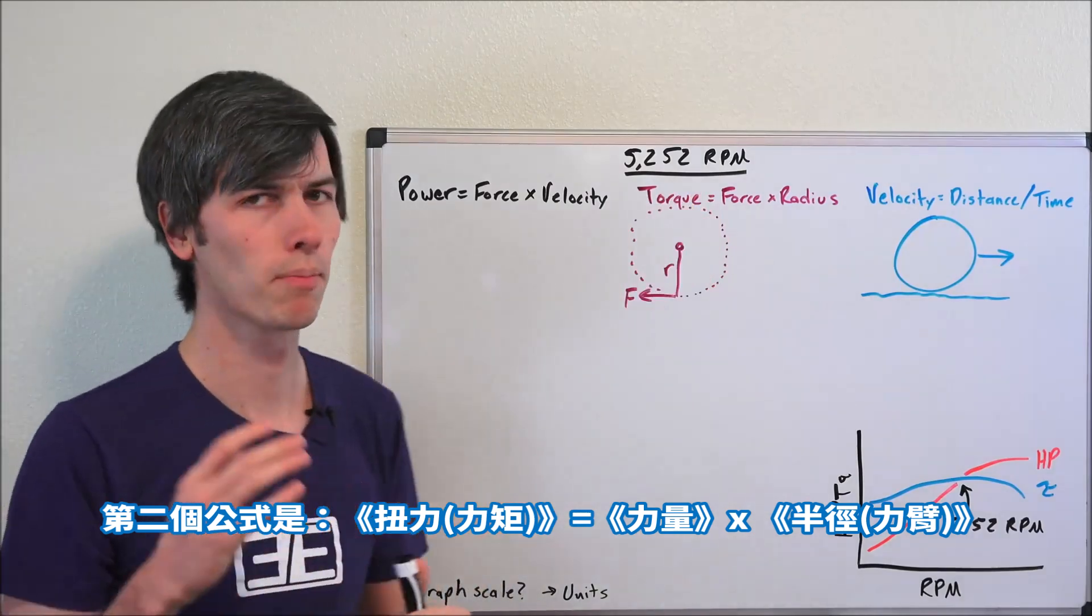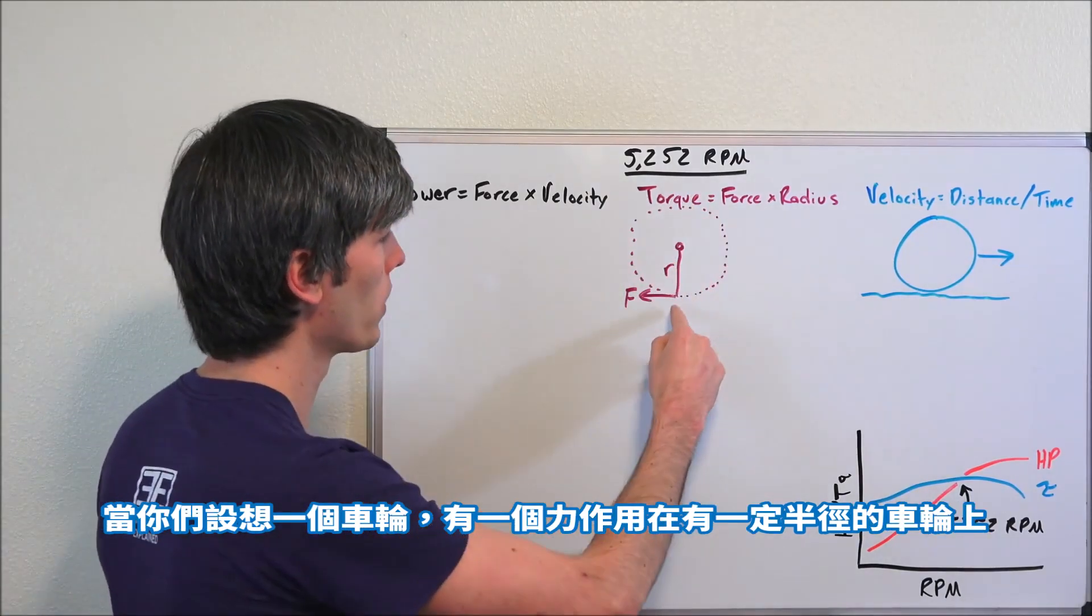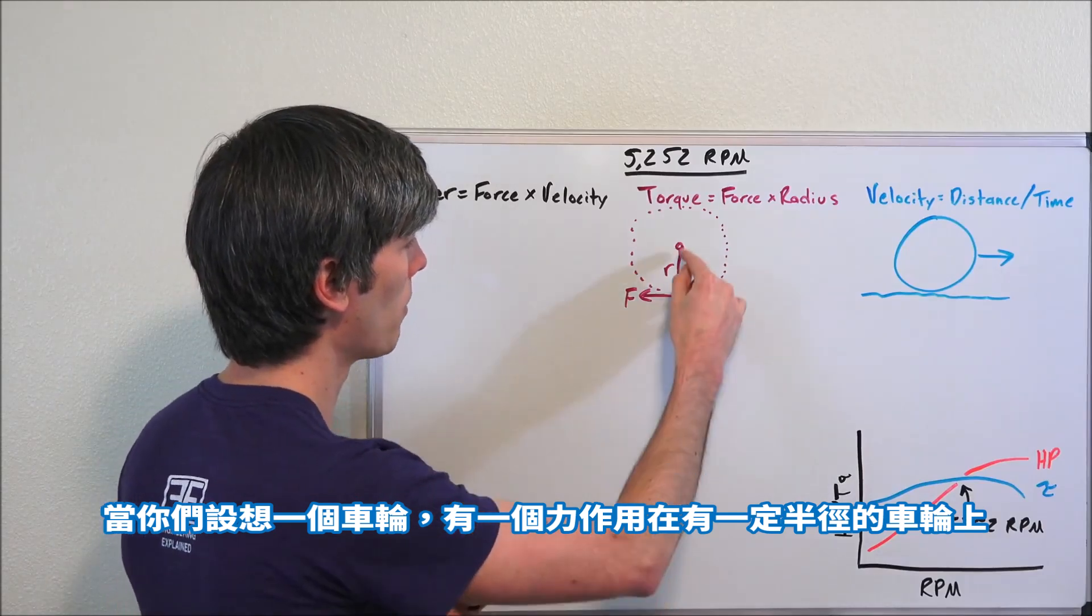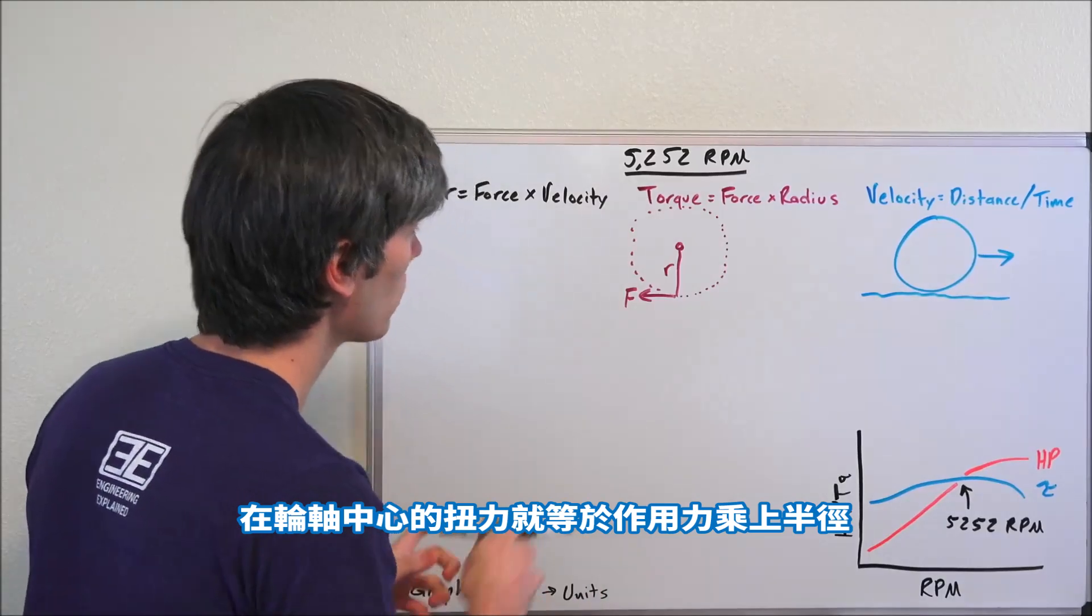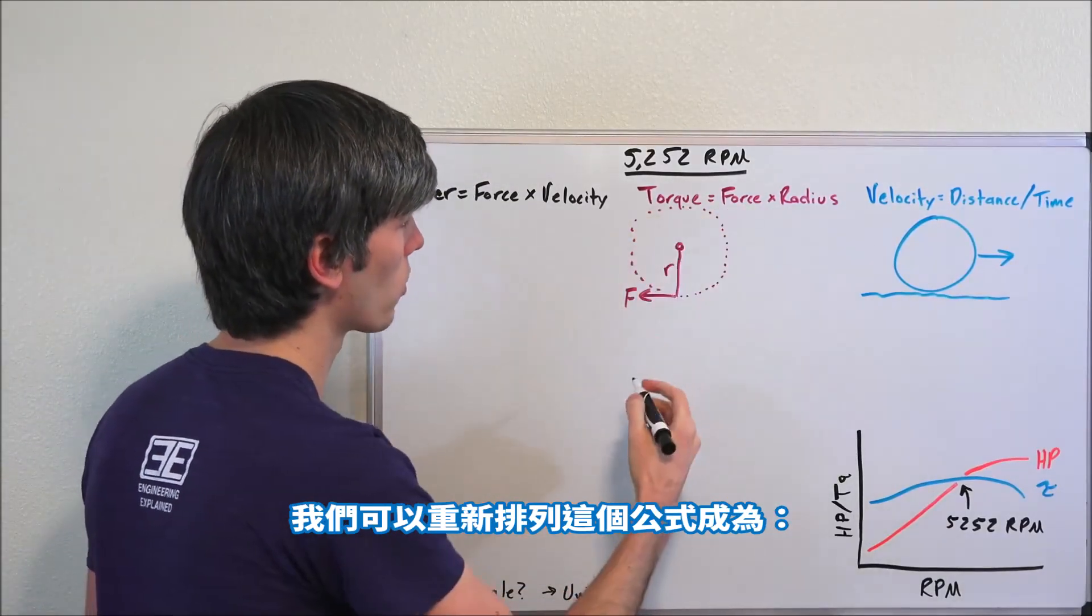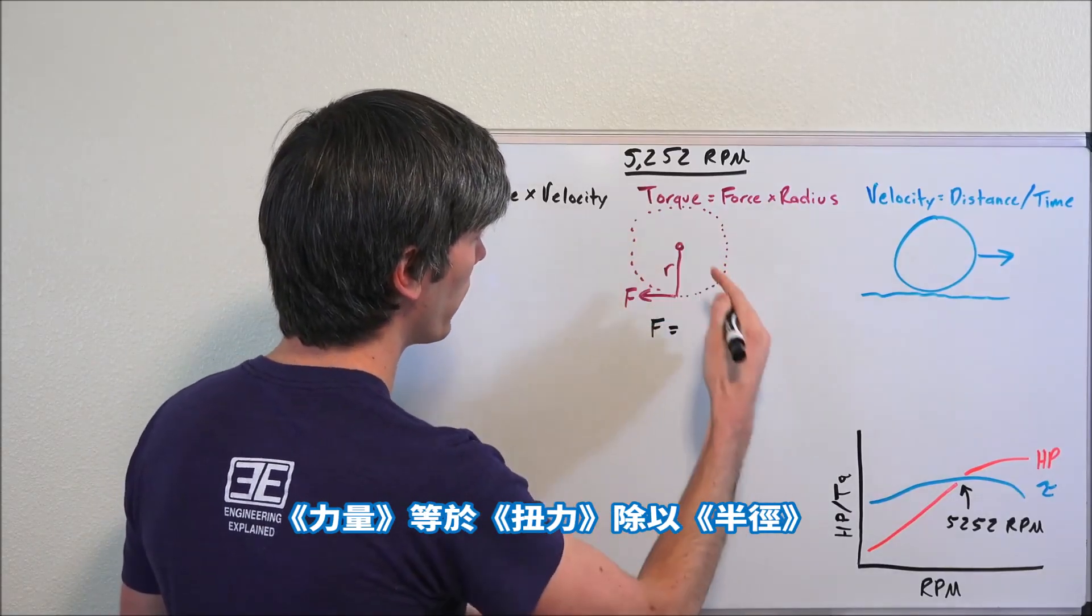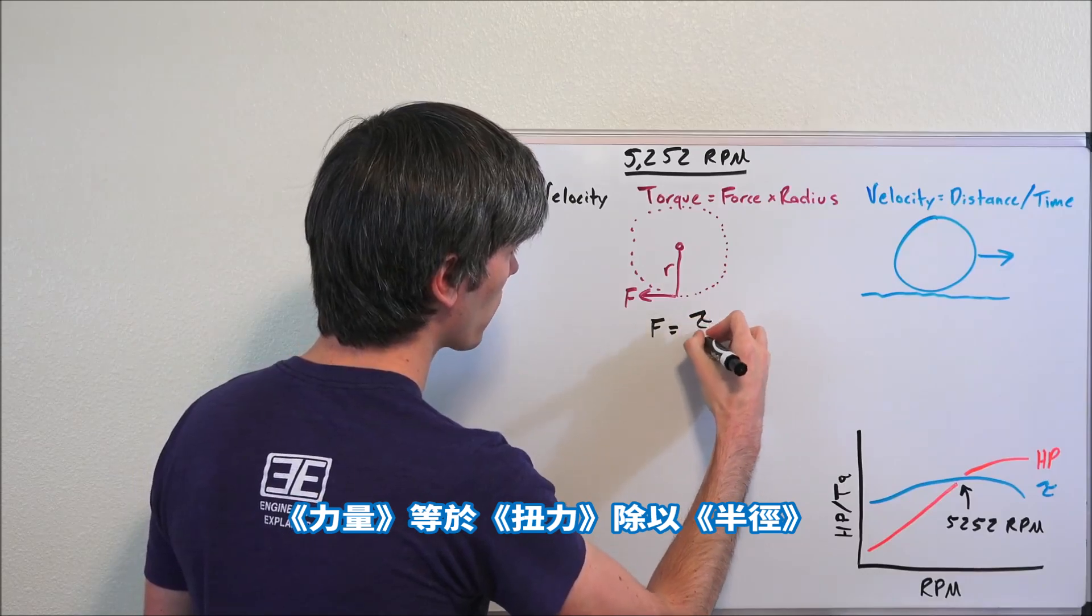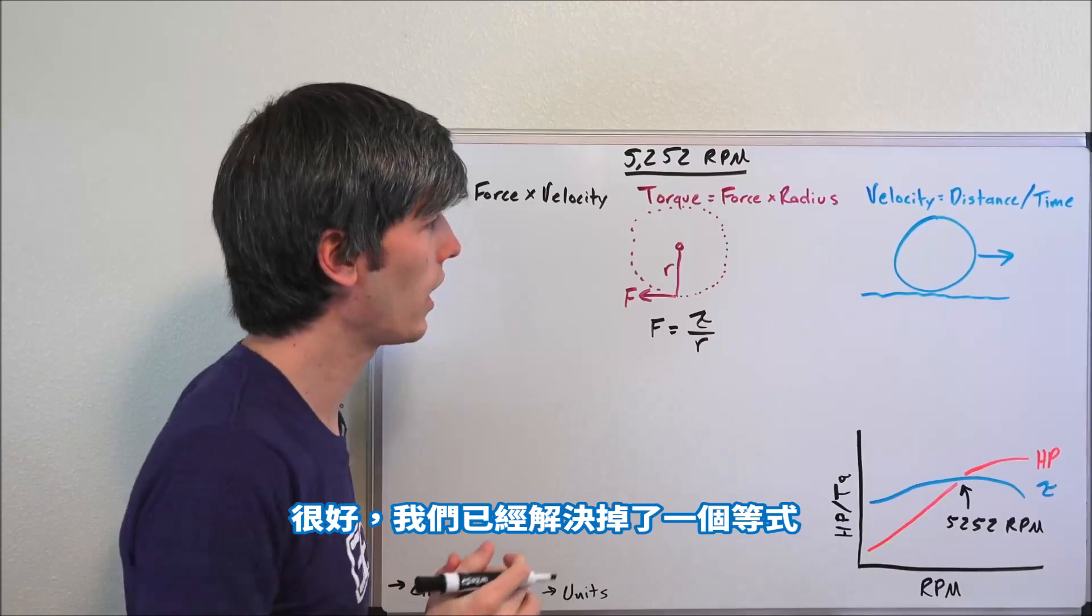Our second equation: torque is equal to force times radius. So if you think about a wheel, you have a force acting on that wheel about a certain radius - the torque at that center is going to be equal to force times radius. Now we can of course rearrange this equation and say that the force equals torque divided by radius. Great, we've got one equation out of the way.